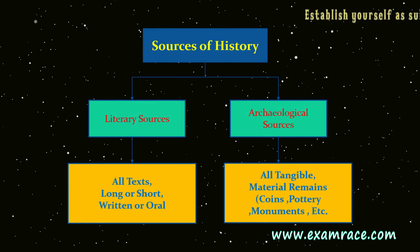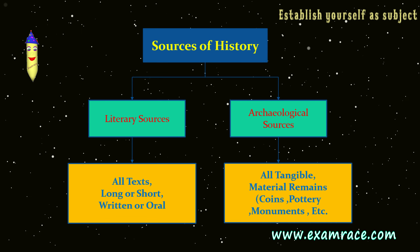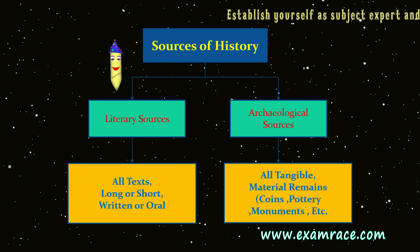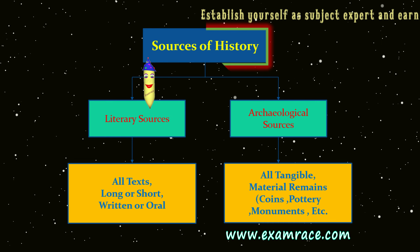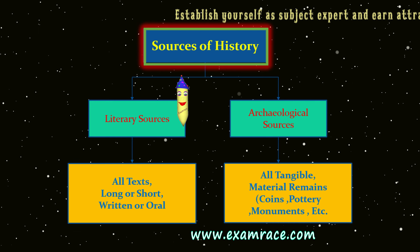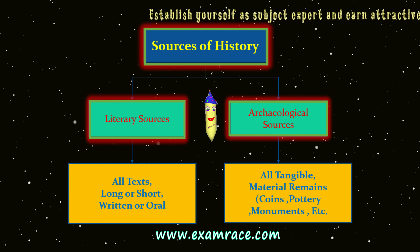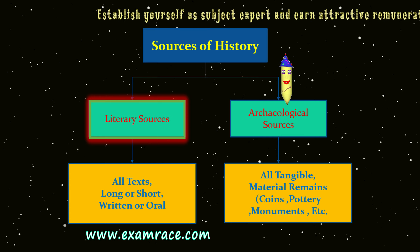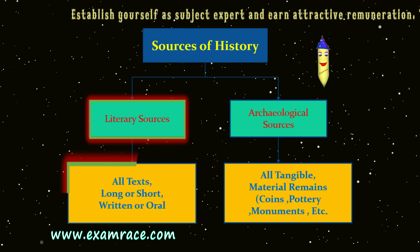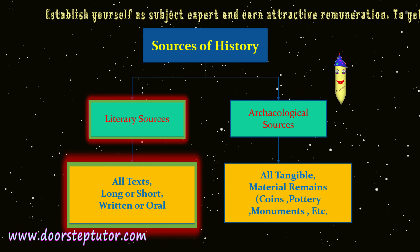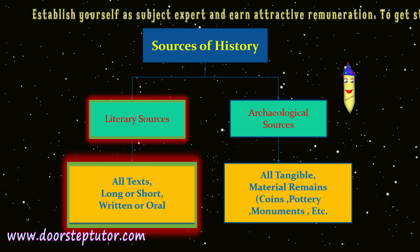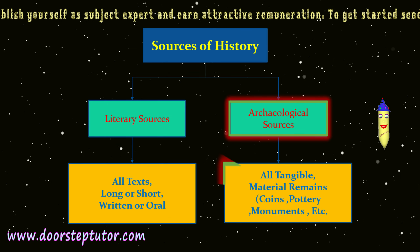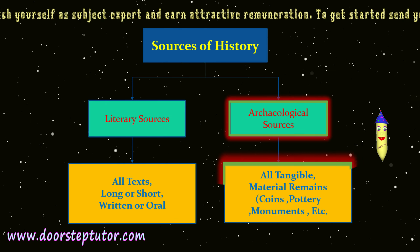All historical interpretations are ultimately based on evidence derived from sources of history. Conventionally, the sources of history are divided into two categories: literary and archaeological. From a historian's point of view, literary sources include all texts, long or short, written or oral, and archaeological sources include all tangible material remains.